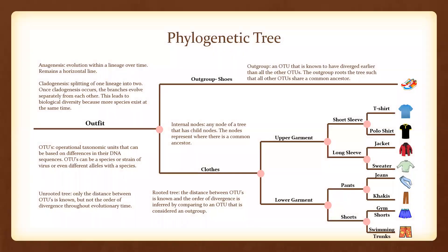As you can see here, I have created a phylogenetic tree using components of an outfit. Starting with outfit, we diverge into our shoes and clothes branch. Shoes are our outgroup and clothes continue to diverge over time.